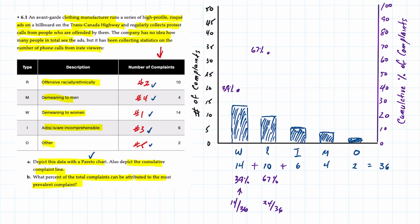Now we add in the third or incomprehensible. So 14 plus 10 plus 6 is 30 out of 36 which gives you 83 percent there.